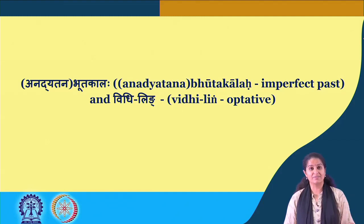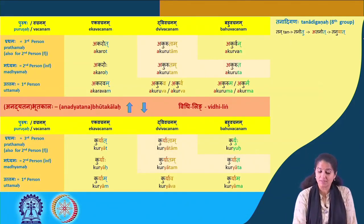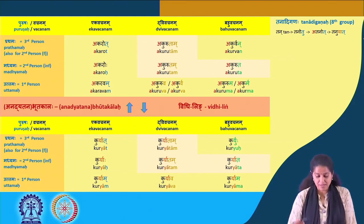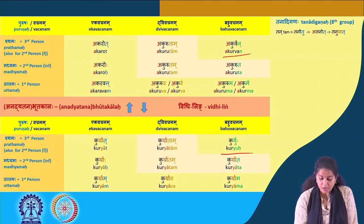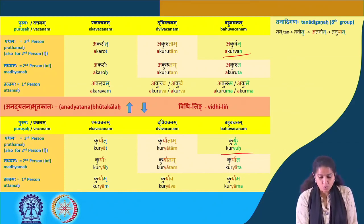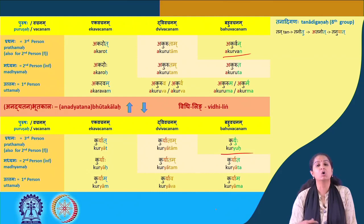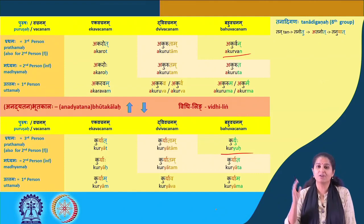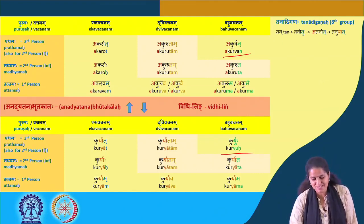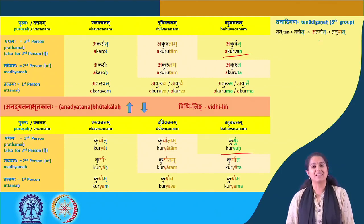Now the Vidhiling. The past tense forms map to Vidhiling: Akaroth becomes Kuryat, Akurutam becomes Kuryatam, Akurvan becomes Kuryuhu, Akaroho becomes Kuryaha, Akurutam becomes Kuryatam, Akuruta becomes Kuryata, Akaravam becomes Kuryam, Akuruva becomes Kuryava, and Akuruma becomes Kuryama. The Vidhiling alone: Kuryat, Kuryatam, Kuryuhu, Kuryaha, Kuryatam, Kuryat, Kuryam, Kuryava, Kuryama — uttamam.